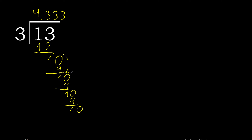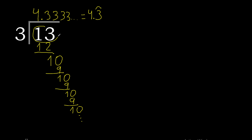The digit 3 repeats. Therefore this number repeats. The answer is 4, point 3 repeating — therefore 13 divided by 3 is 4.3̄, or written as this.